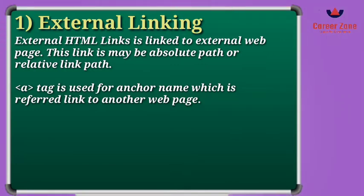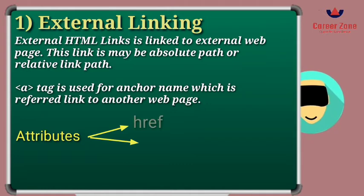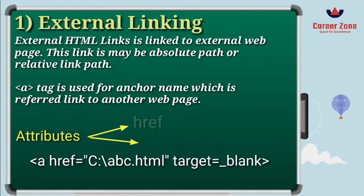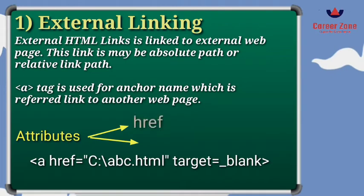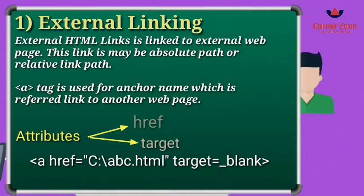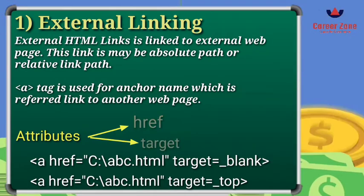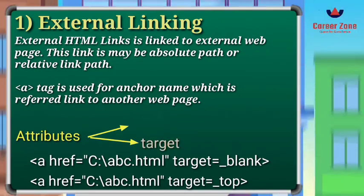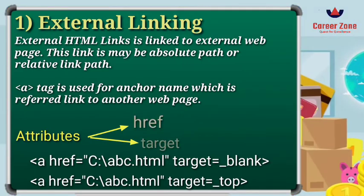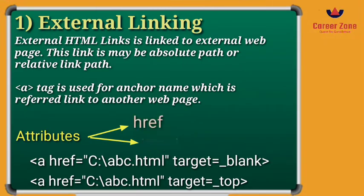The anchor tag allows you to create a link with a different web page. It has two attributes for external linking. The first one is href, which is hypertext reference, where you have to write the full location of the page or file you want to link. The second one is the target attribute, which allows you to decide whether the linked page opens on the same tab or a different tab.